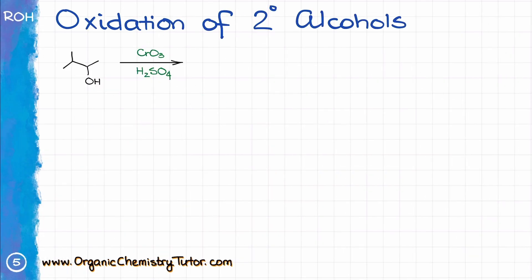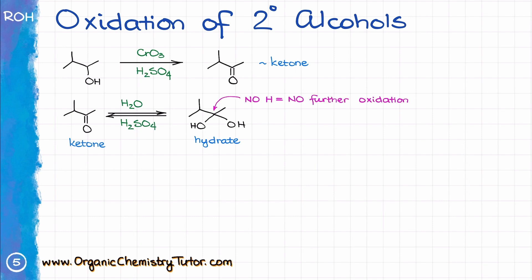Now, when it comes to secondary alcohols, the reaction can only go through one round of oxidation. And yes, ketones, just like aldehydes, can easily form a hydrate as well. However, since there is no hydrogen on the carbon with the OHs in this case, we cannot oxidize it any further, and so the molecule stays as a ketone without any further oxidation.